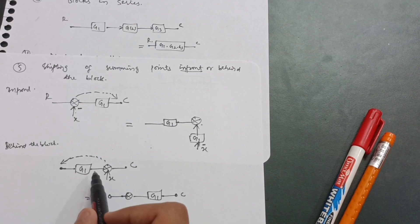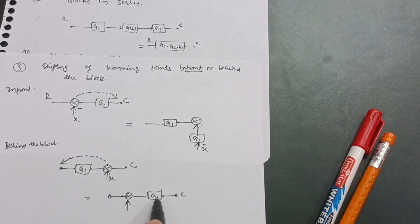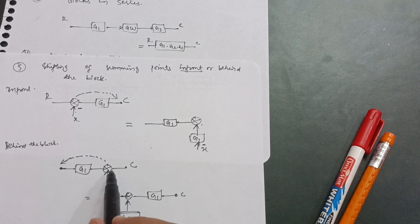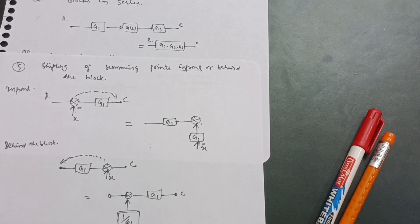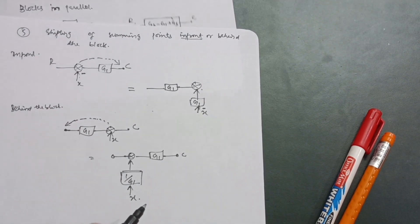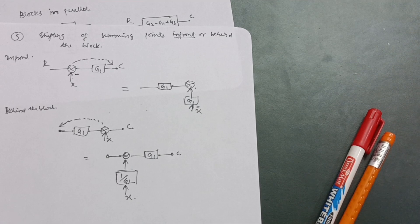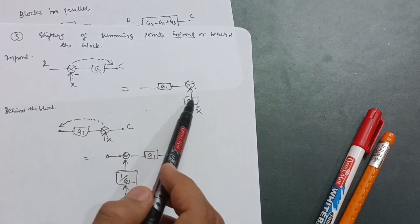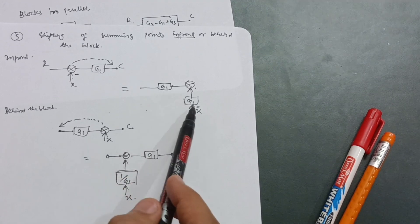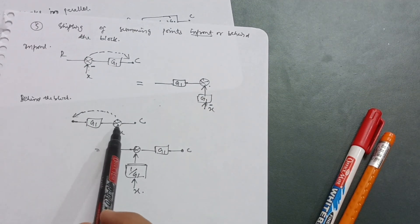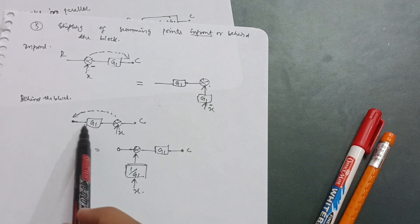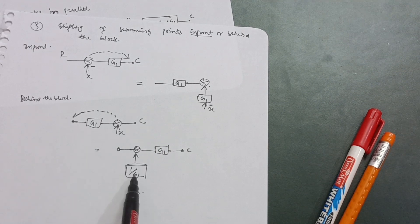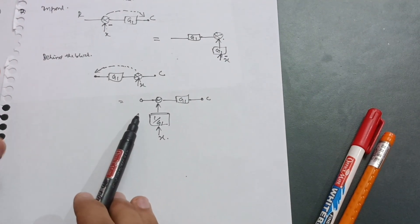Whenever you are shifting the summing point behind the block, you add the inverse of the block value — that is 1/G1 — with the same feedback value X. This is the fifth rule: shifting summing points in front of the block means add block value G1 to the feedback; shifting behind the block means add 1/G1 (inverse value) to the feedback.